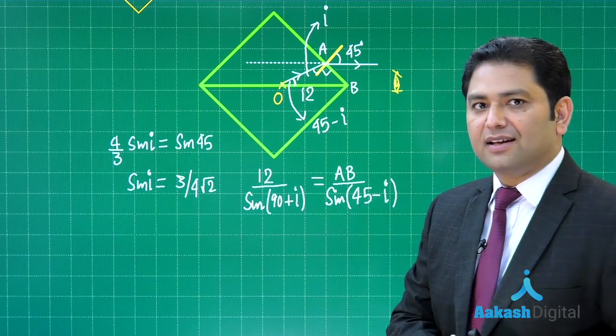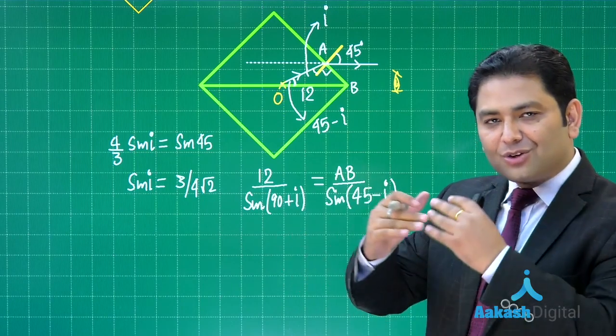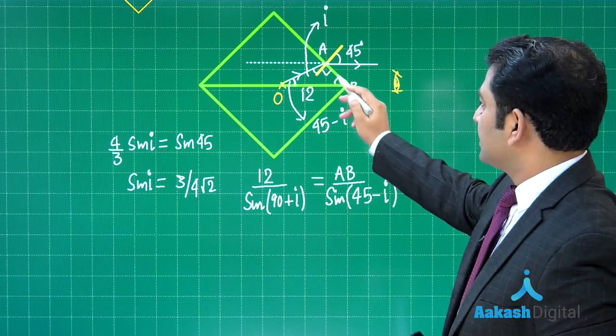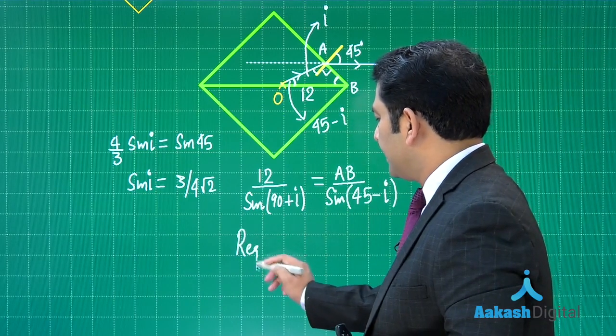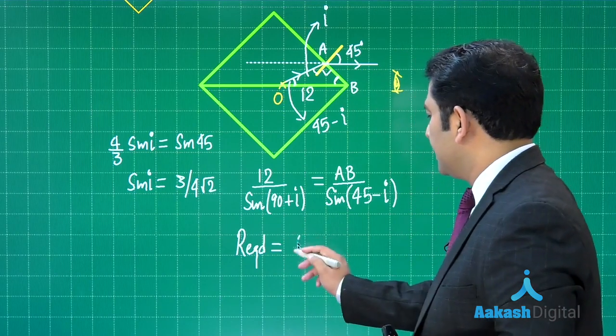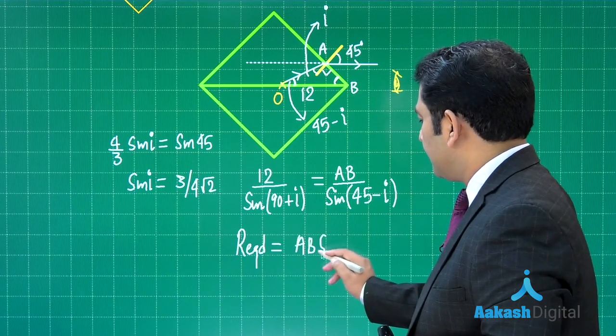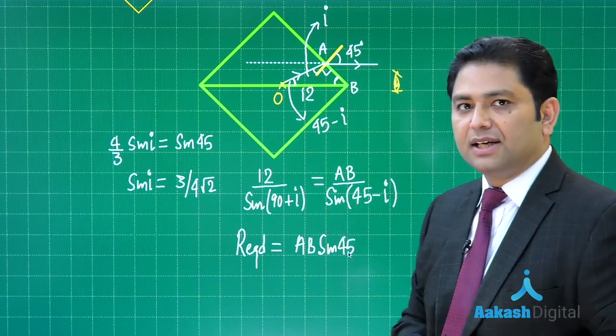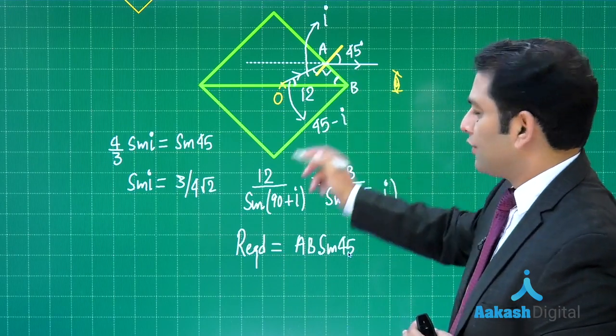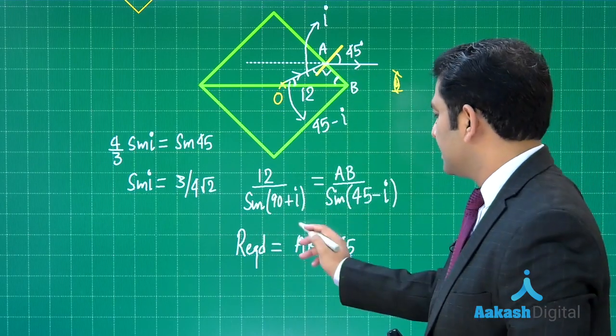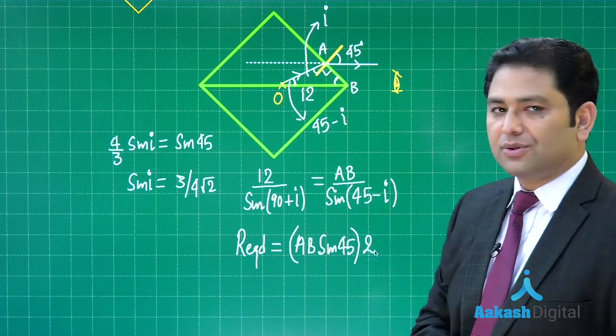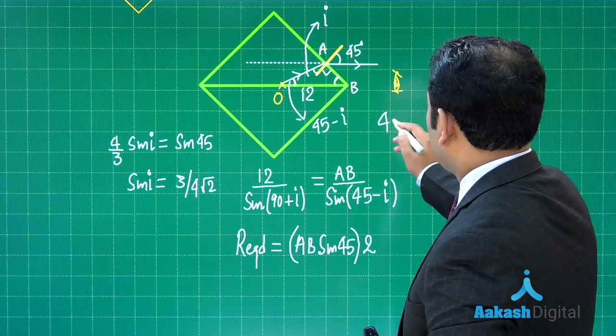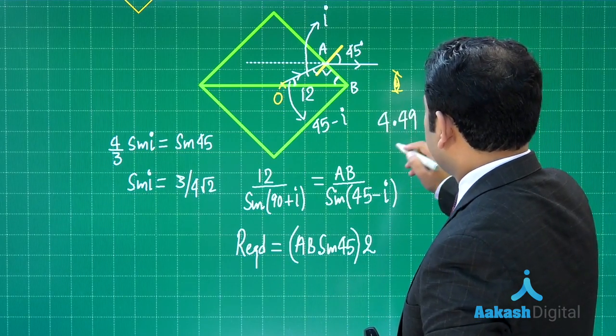The question asks for separation between the two images. This angle is 45 degrees and the required answer goes like this: AB multiplied by sin 45 is this particular height. But exactly the same way, an image is also formed via the lower surface, so you multiply by two.